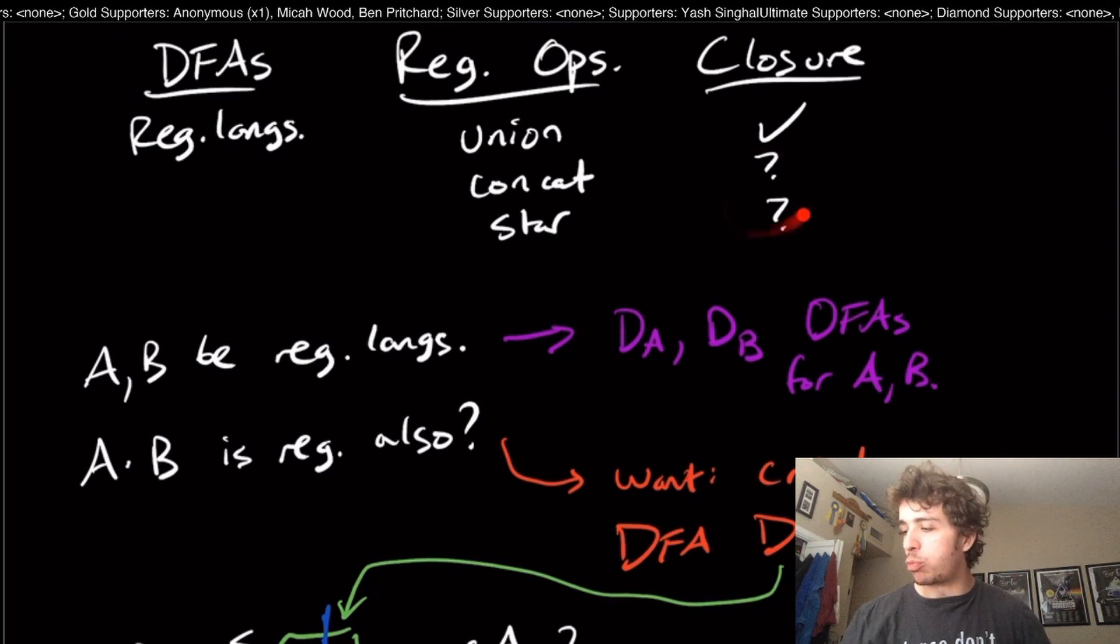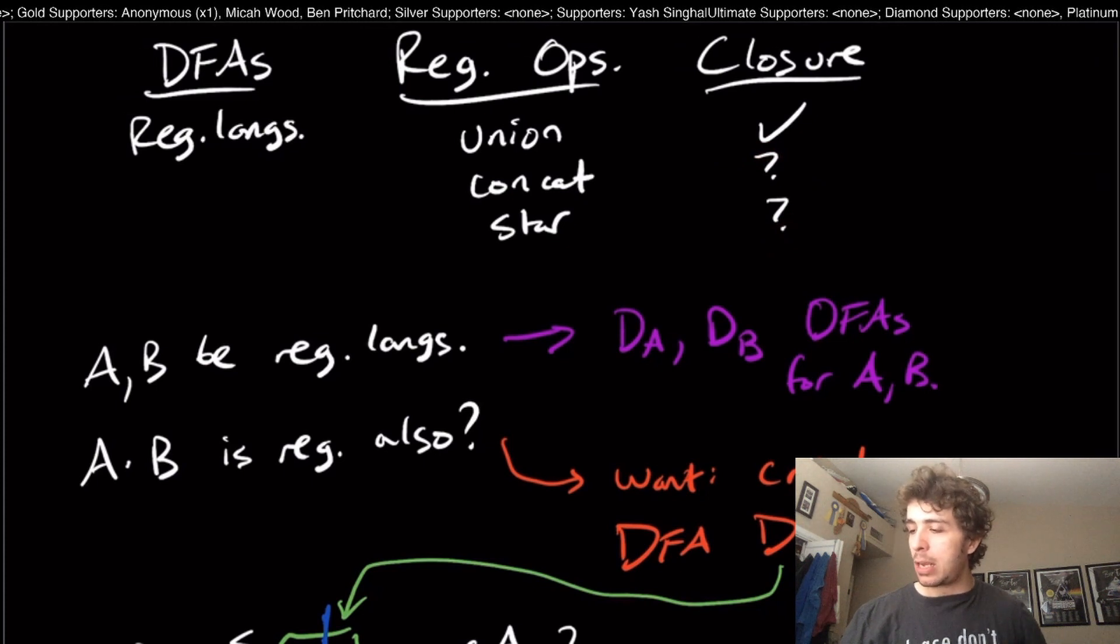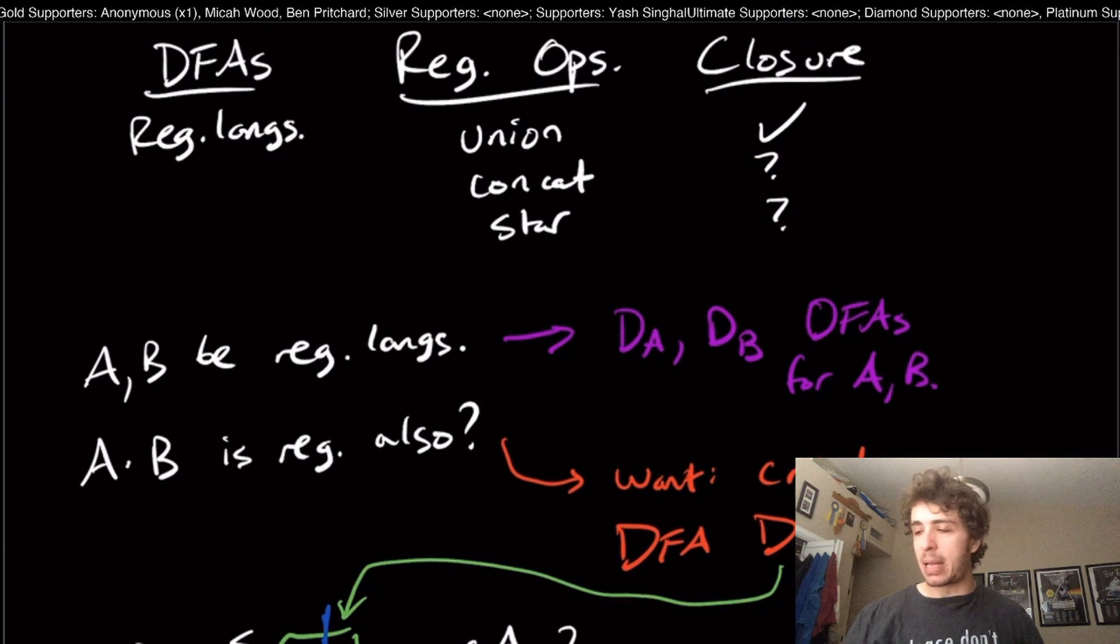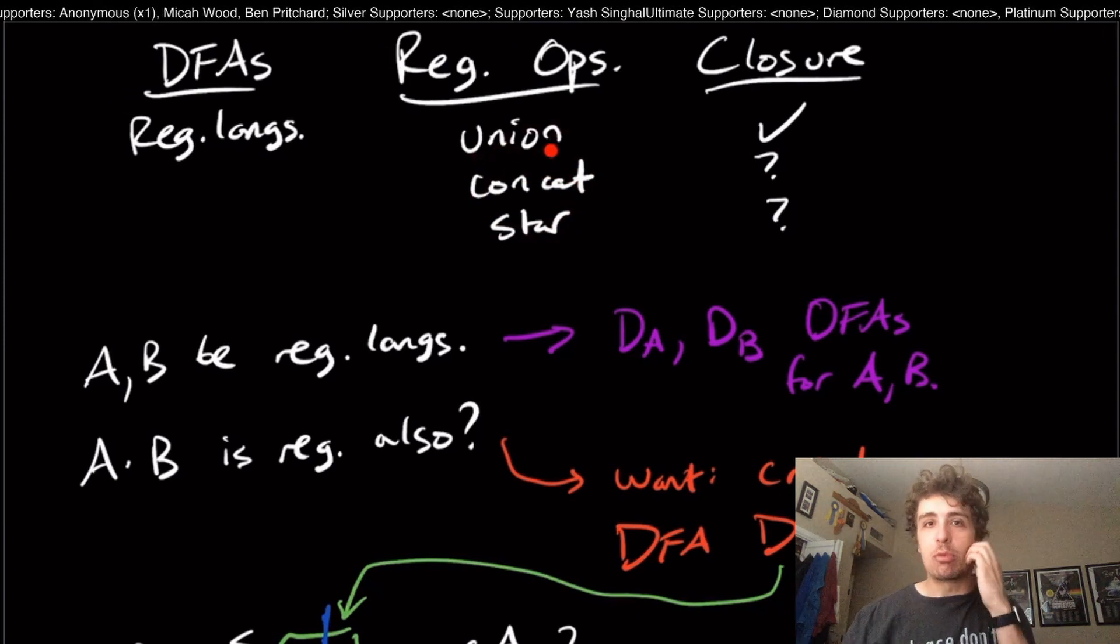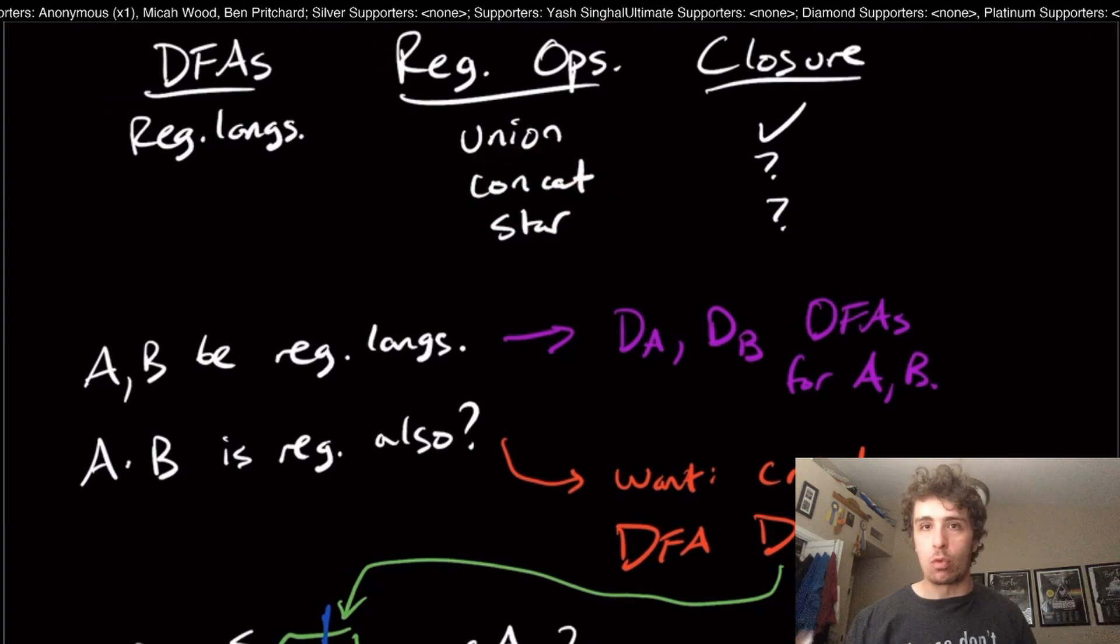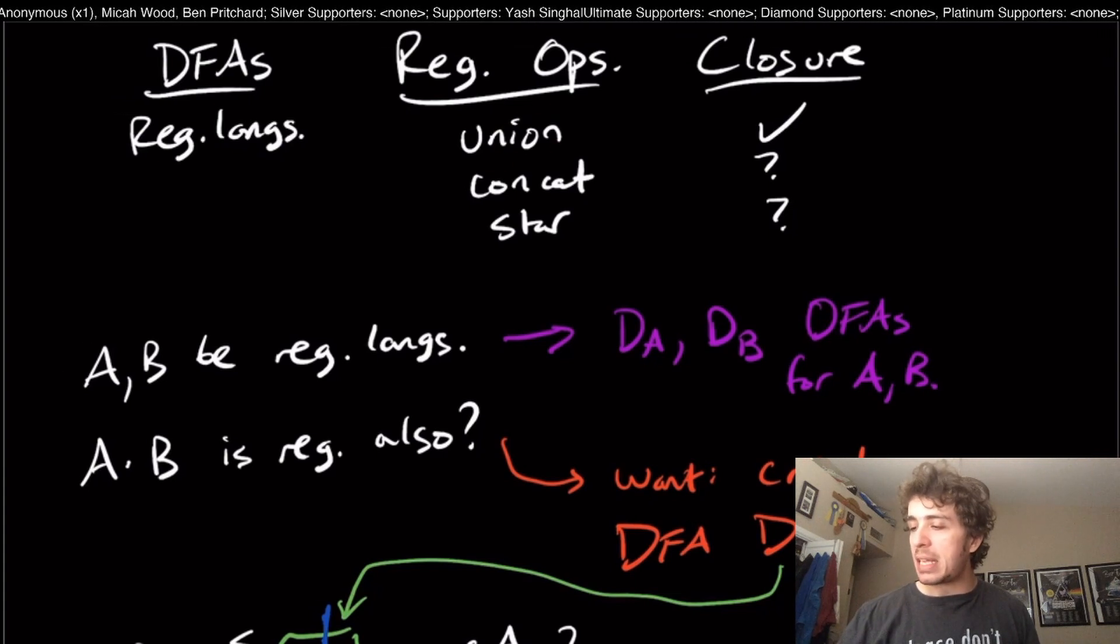That's one of the reasons why DFAs are hard to use with concatenation and star. One thing that some people ask me is: why do we even focus on these? Why don't we just say we're going to stick with union and not even worry about anything else?